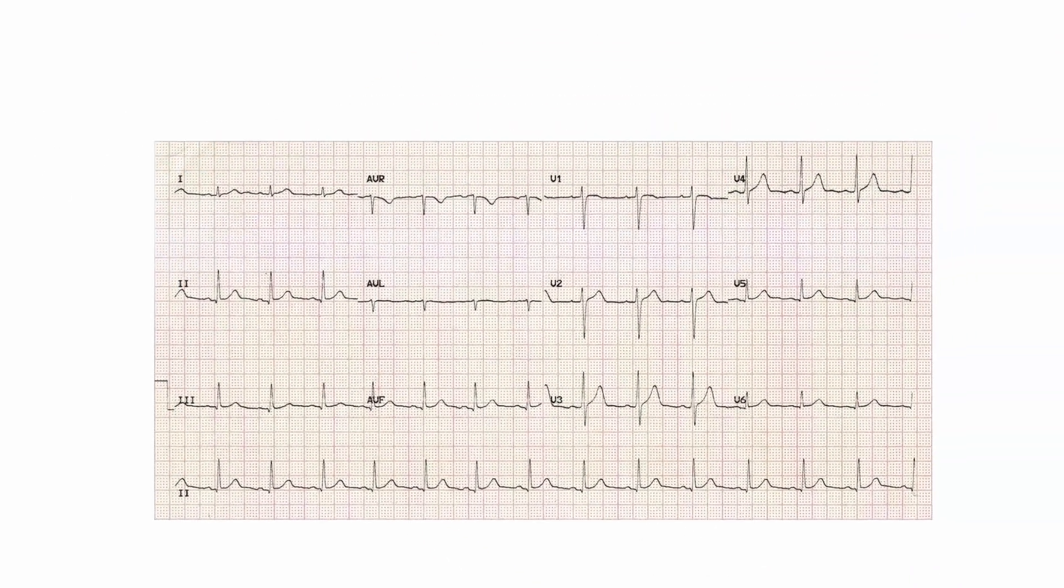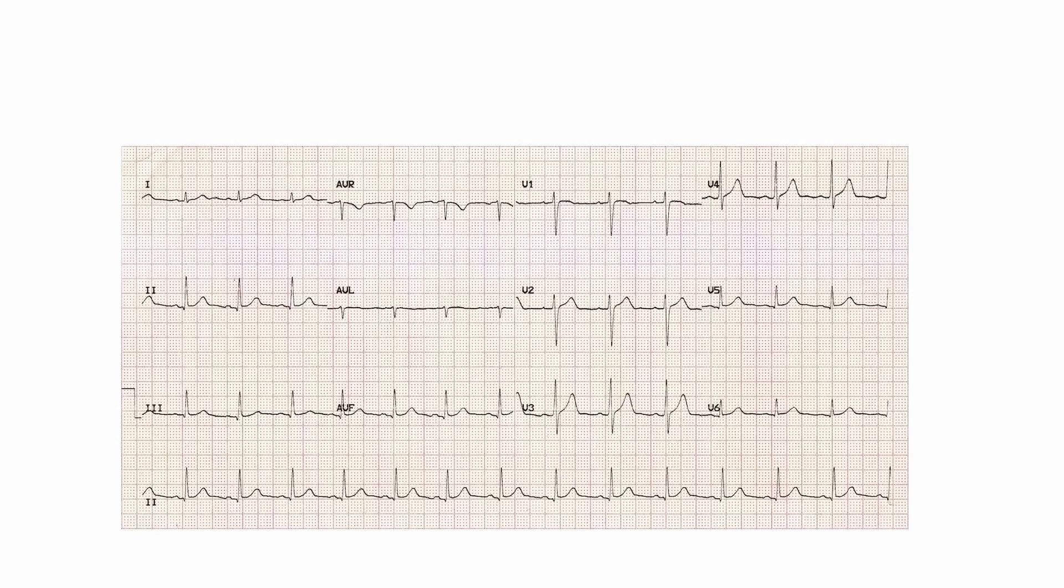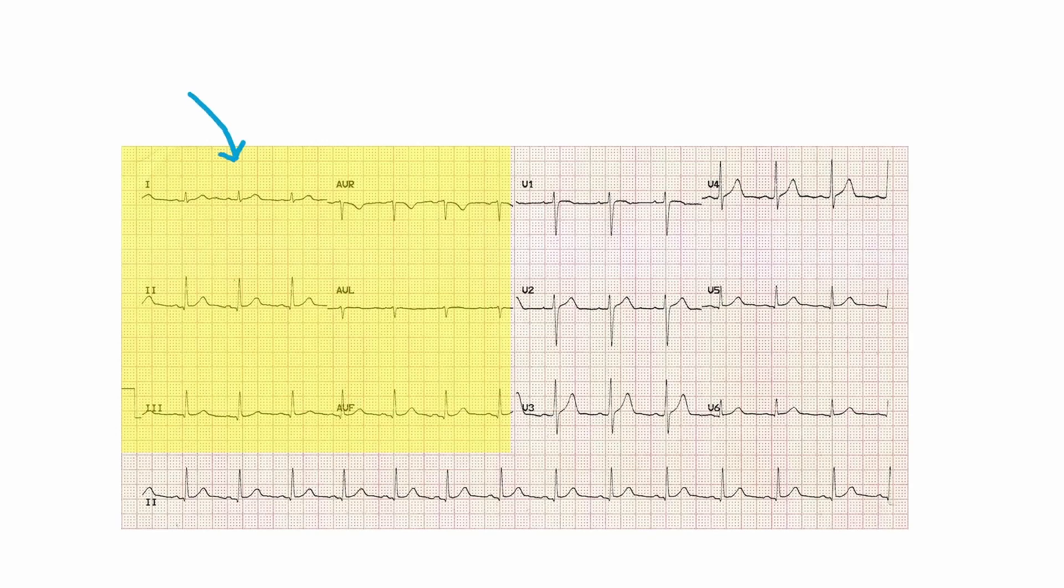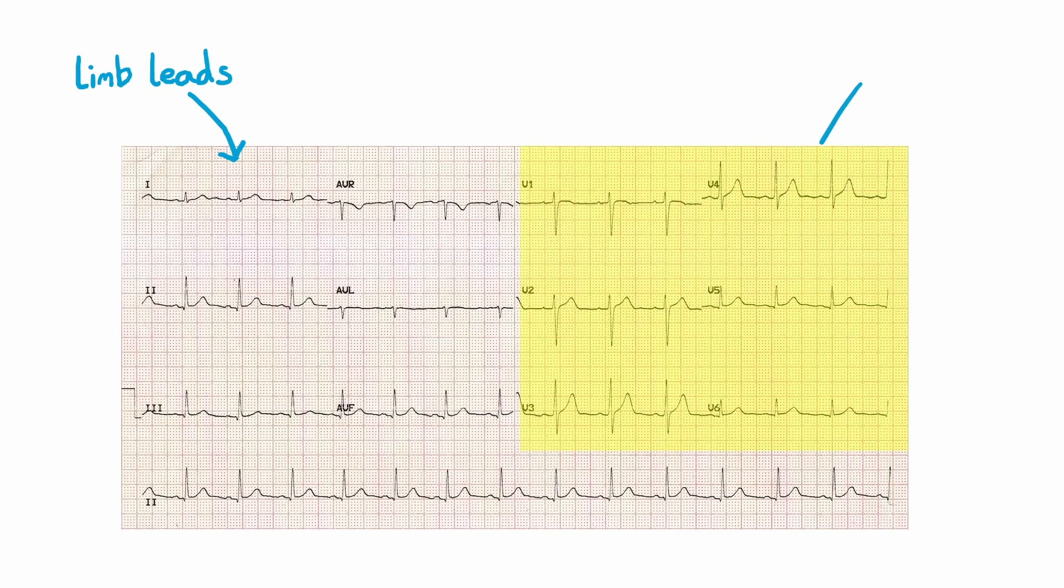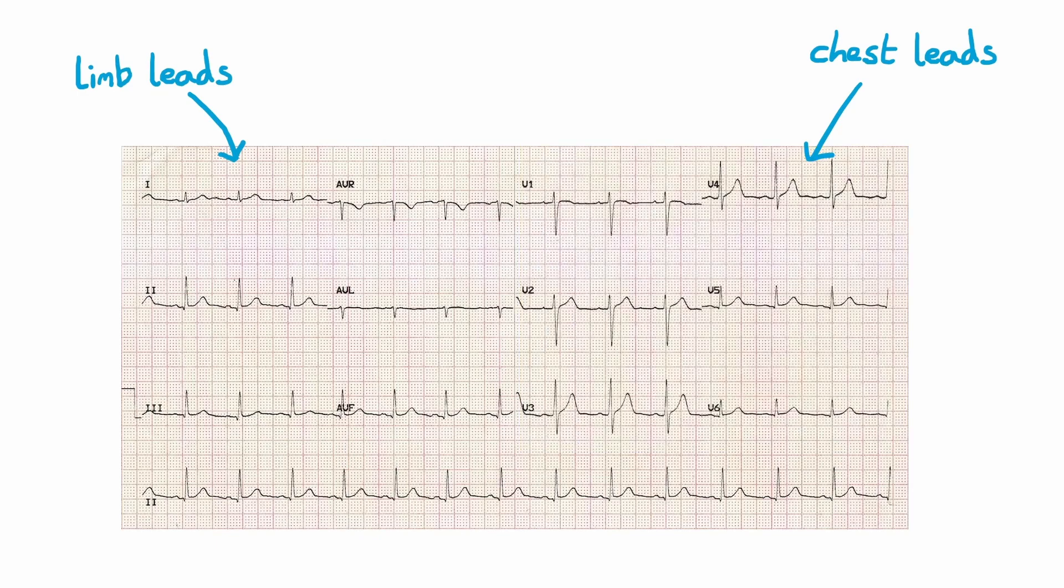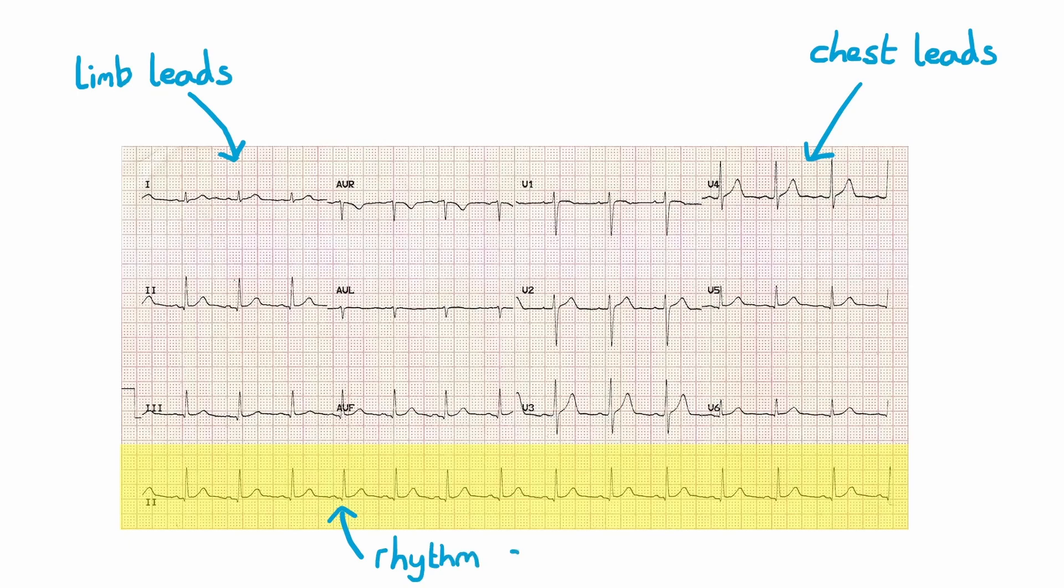The way the leads in this ECG are laid out is what you will commonly see in medical practice, with limb leads on the left which are 1, 2, 3, AVR, AVL and AVF, and then chest leads on the right which are V1 to V6. Limb and chest leads look at the electrical activity of the heart in different planes. The long uninterrupted strip at the bottom is called the rhythm strip and is usually lead 2.